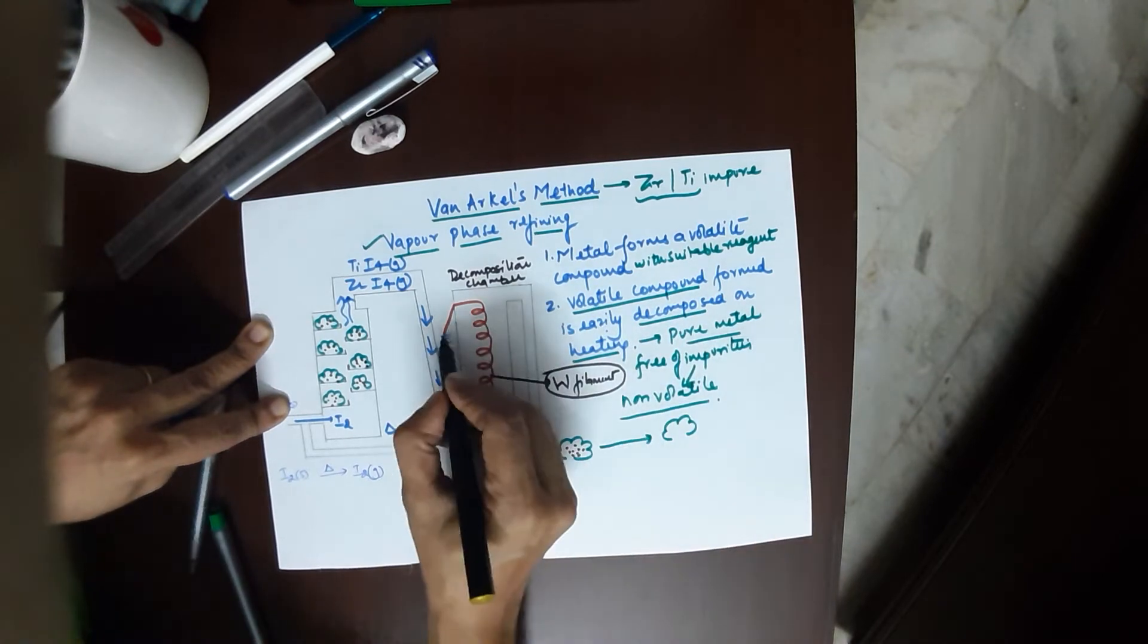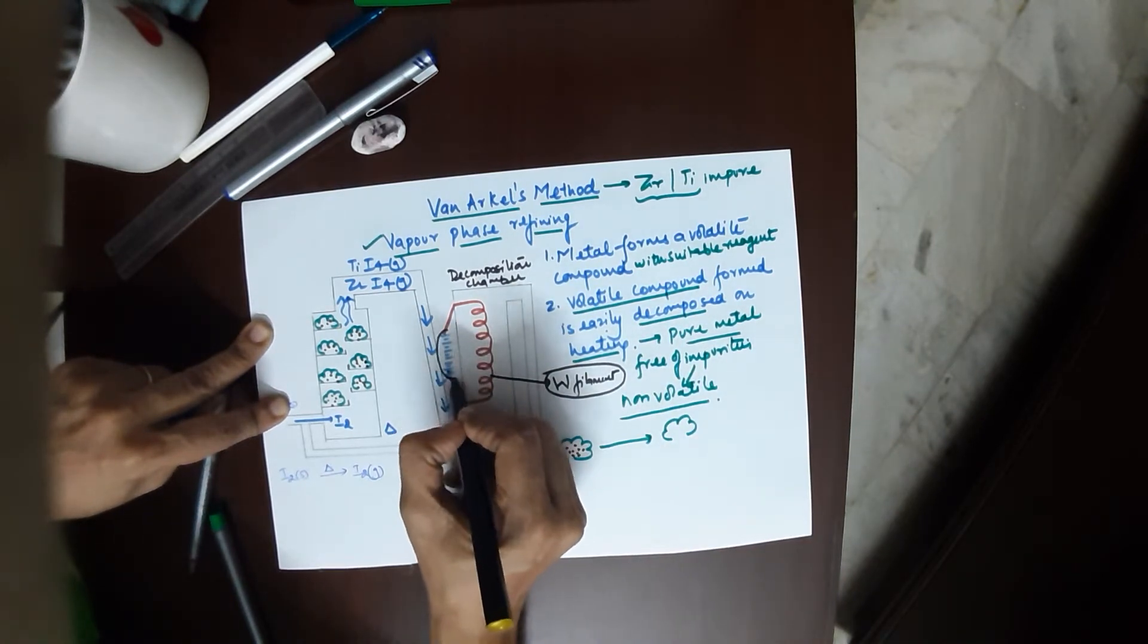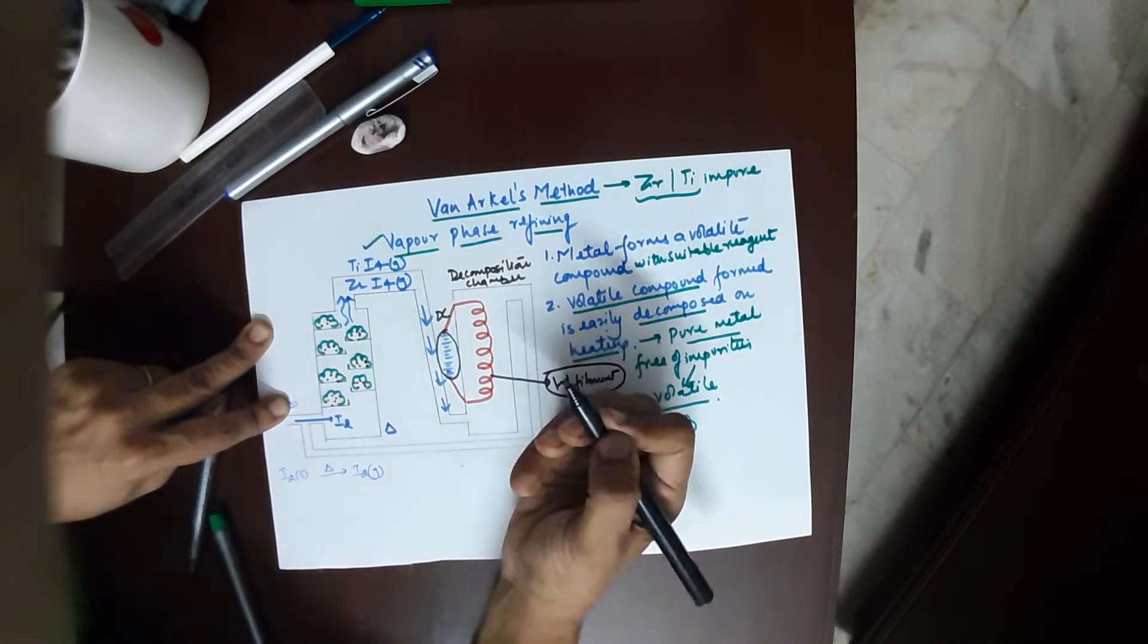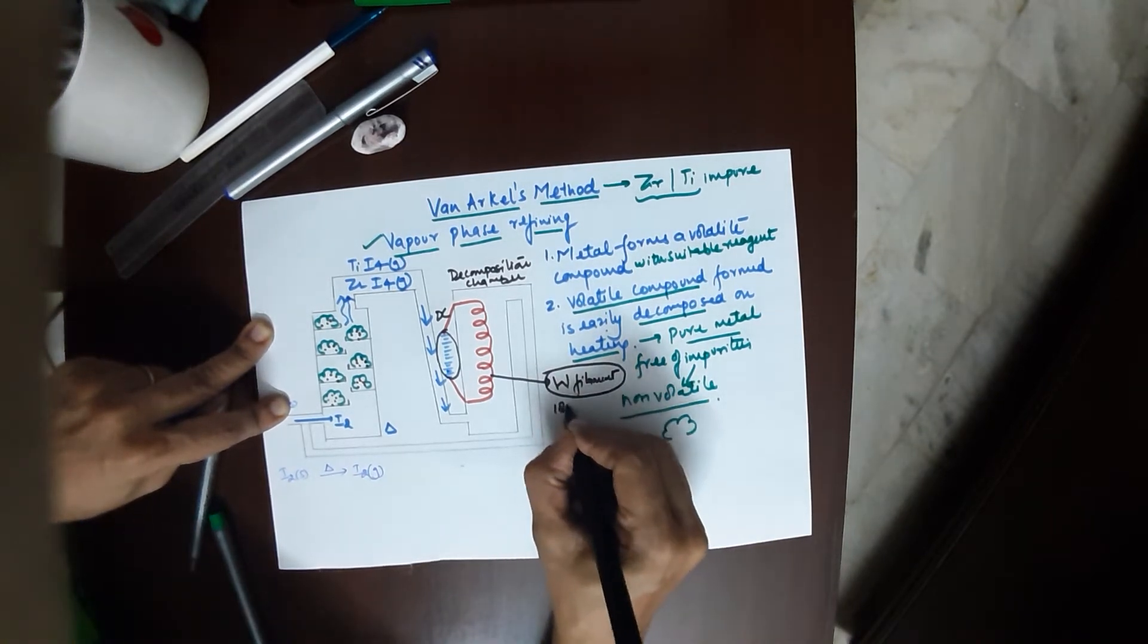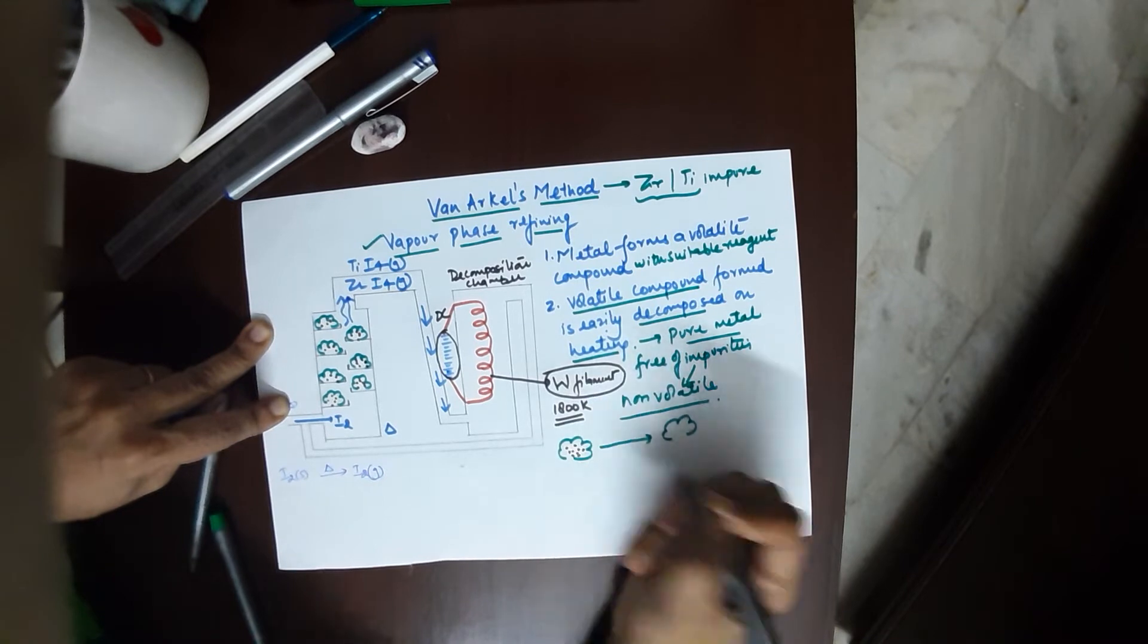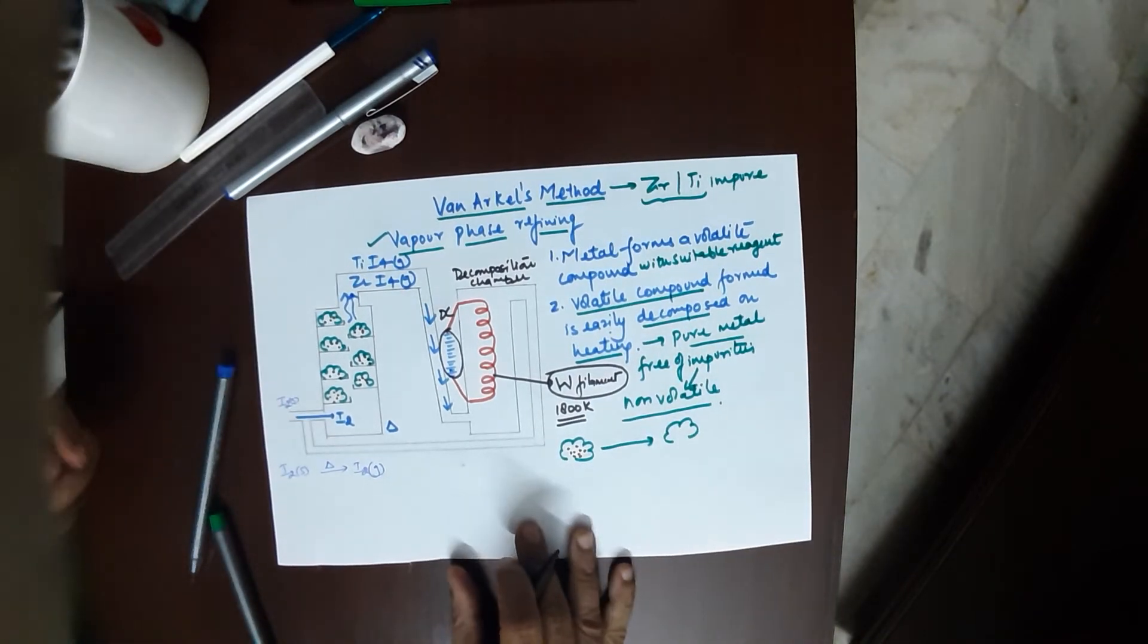This second chamber is called the decomposition chamber. The specialty of this decomposition chamber is it has a tungsten filament. This tungsten filament generates a very high temperature by means of a high voltage, which is your DC voltage of around 1800 Kelvin.